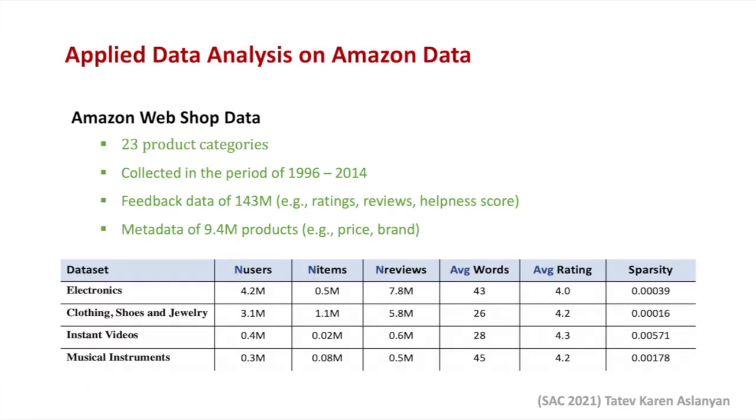Having described our methodology and evaluation setting, let us now look at the data that we use to perform the analysis. Our data comes from the largest e-commerce in the world, the Amazon web shop, consisting of 23 product categories. Each of those datasets consists of two parts. Feedback data, consisting of 143 million product feedbacks in the form of ratings, textual reviews, and helpfulness score. And metadata, about 9.4 million products, that describes the various characteristics of these products, such as price, brand, etc.